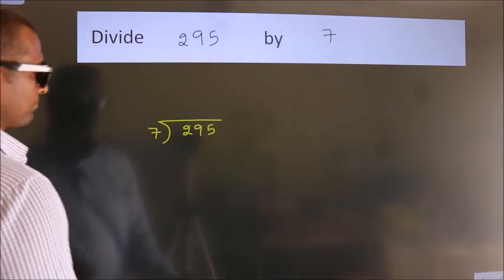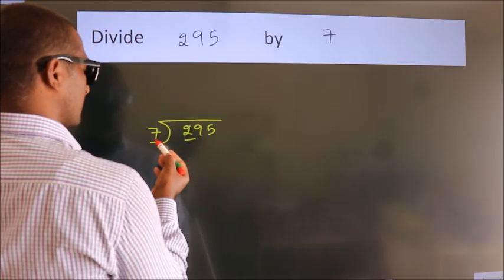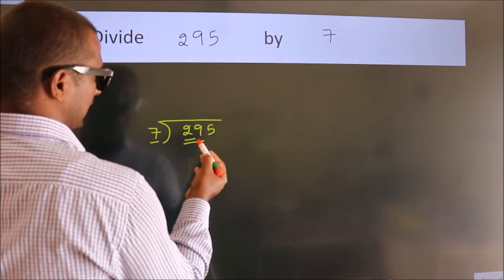Next. Here we have 2. Here 7. 2 is smaller than 7, so we should take 2 numbers. 29.